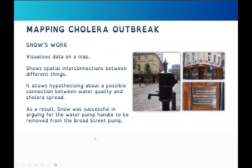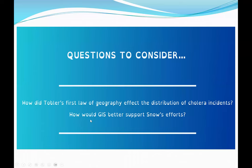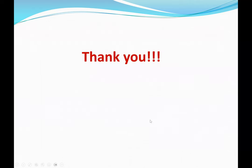This is a very good example of how GIS can help solve public health or epidemiological problems. Questions to consider from this lecture: how did Tobler's first law of geography affect the distribution of cholera incidents? And how would GIS better support Snow's efforts? We are going to discuss these questions in class — first as homework, then we will discuss in our next lecture. Thank you for your time.